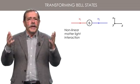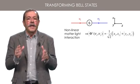Using non-linear interaction between light and matter, as we will see in a future lesson, one can produce a pair of entangled photons in a Bell state. For instance, the phi-plus state.